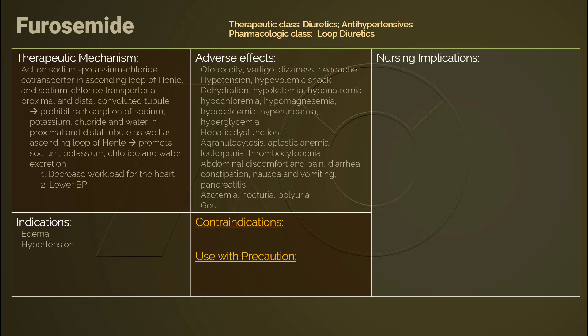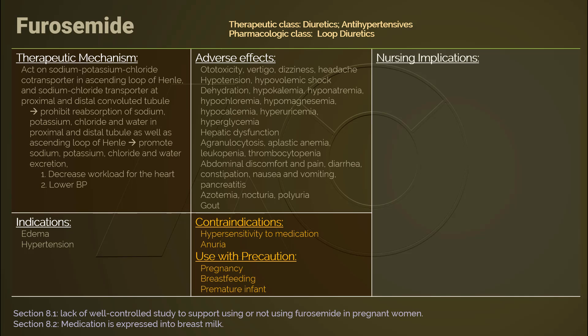The risk for ototoxicity increases when using furosemide inappropriately, in combination with other ototoxic medications, or in patients who have severe renal impairment. Patients with severe renal impairment, anuria, or sensitivity to furosemide should not take this medication.